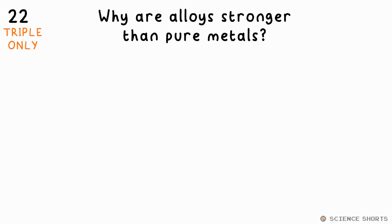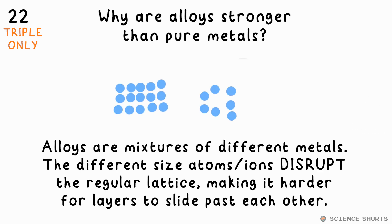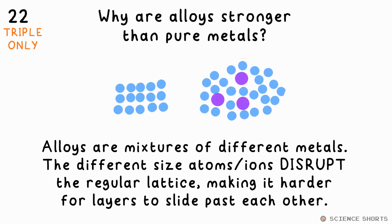Why are alloys stronger than pure metals? Alloys are stronger because the different sized atoms disrupt the lattice — the pattern — making it harder for the layers to slide past each other.